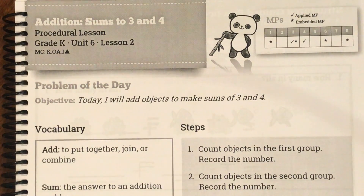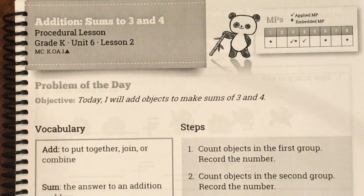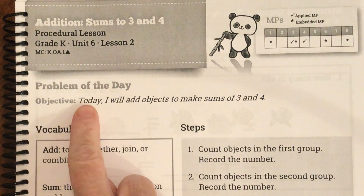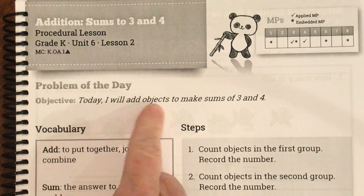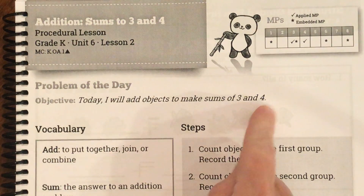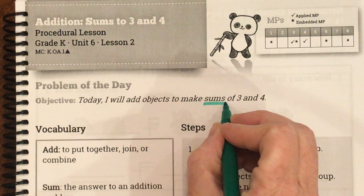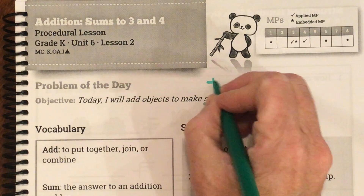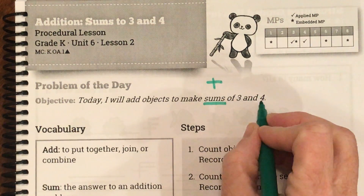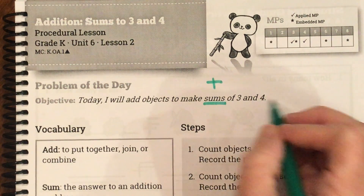Good morning, boys and girls. Today we're on page 103, and our objective today is: today I will add objects to make sums of 3 and 4. We're going to underline the word 'sums.' Sums means we're going to be adding, and the largest answer we're going to have is 4, because a sum is the answer to an addition problem.